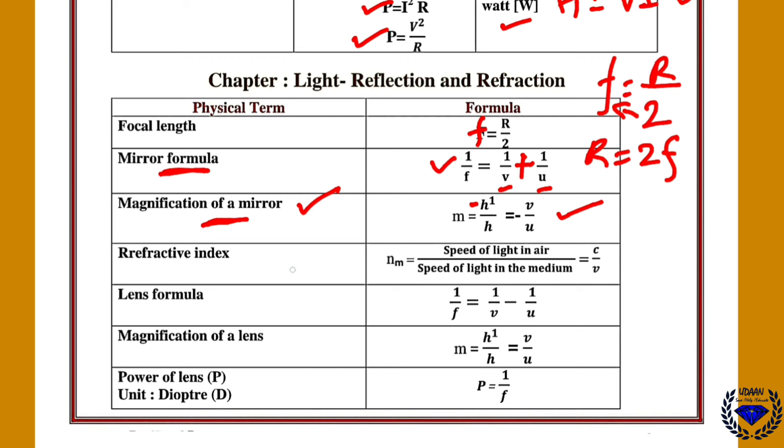Then refractive index is speed of light in air divided by speed of light in medium. So here speed of light is constant, that is 3 into 10 to the power of 8 meter per second.